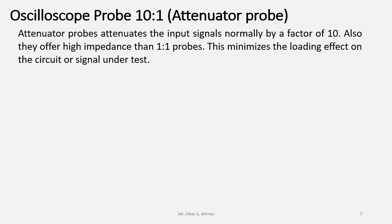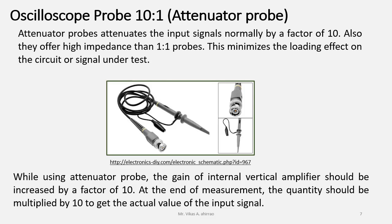The attenuator probe attenuates the input signal normally by a factor of 10. Also, they offer high impedance than 1:1 probes. This minimizes the loading effect on the circuit or the signal under test. The picture shows the 10:1 or attenuator probe.